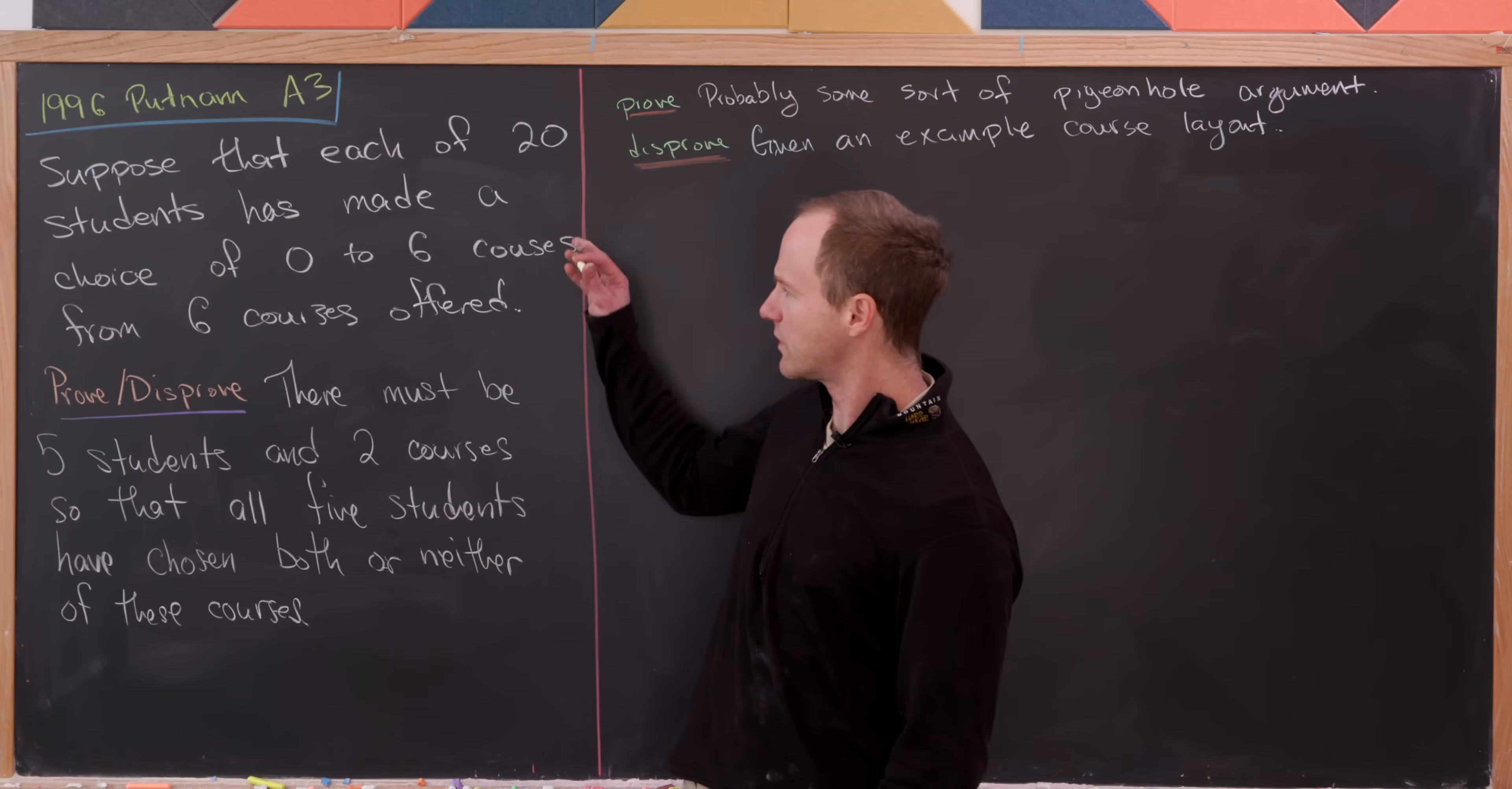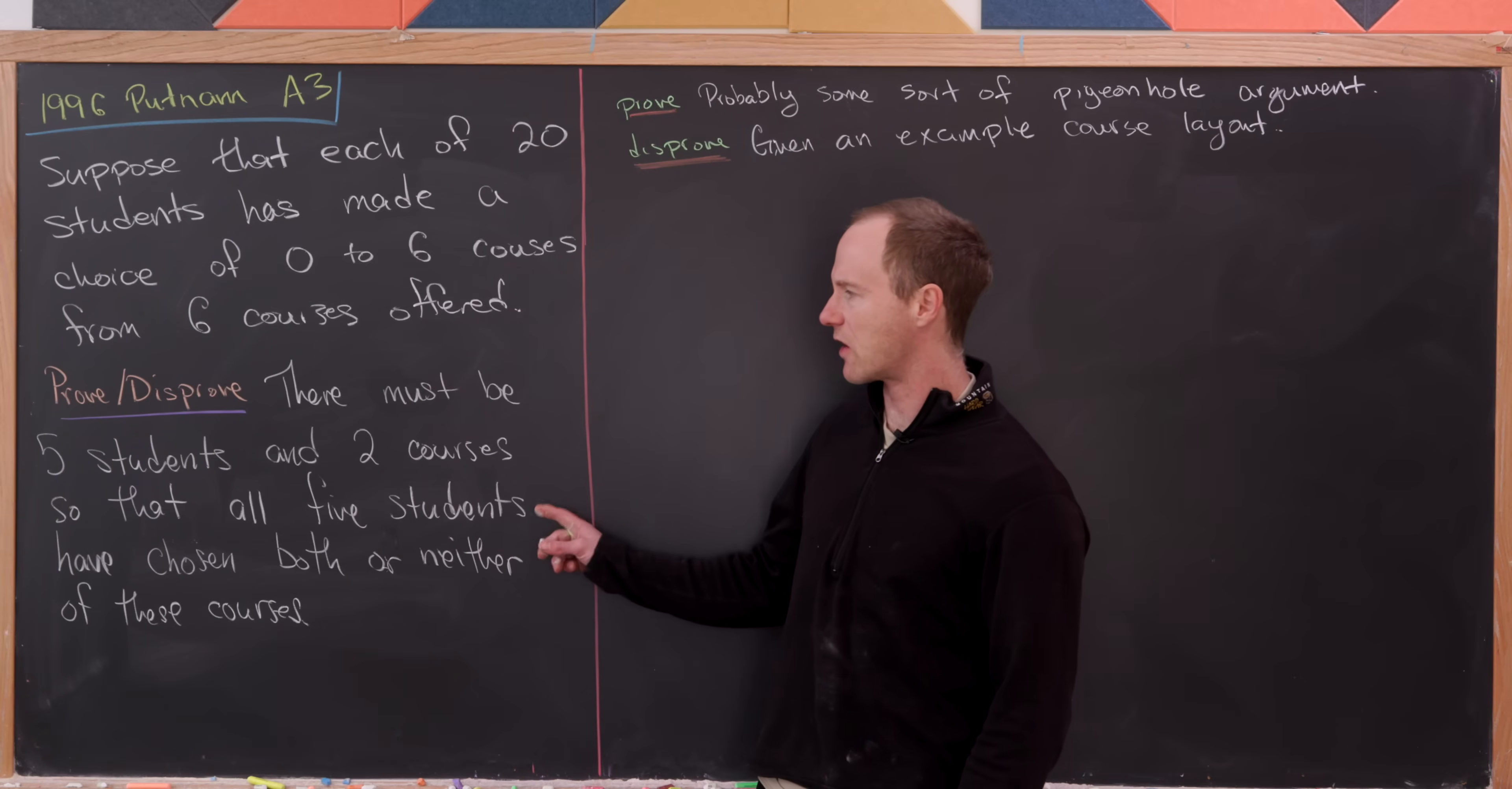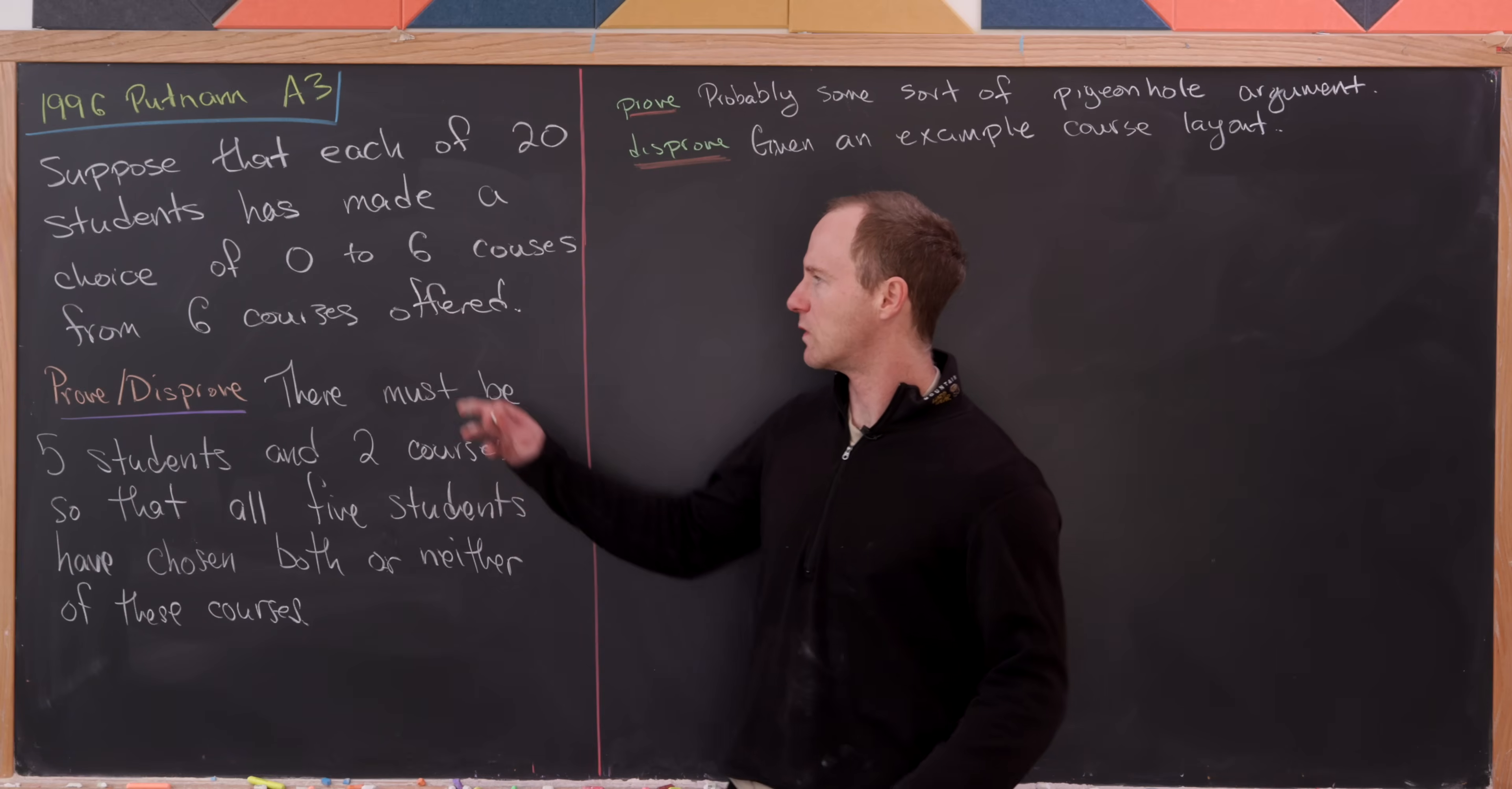So there's several numbers over here. And probably if we can cook up some sort of example, it'll be built out of some coincidences between these numbers. So now let's notice that if we were to try to find a counterexample to this statement, then that counterexample would spread the courses out among the students in some sort of even way. So if you think about spreading the courses out among the students in an even way, since they're choosing between zero and six courses, perhaps they would choose the number right in the middle there.